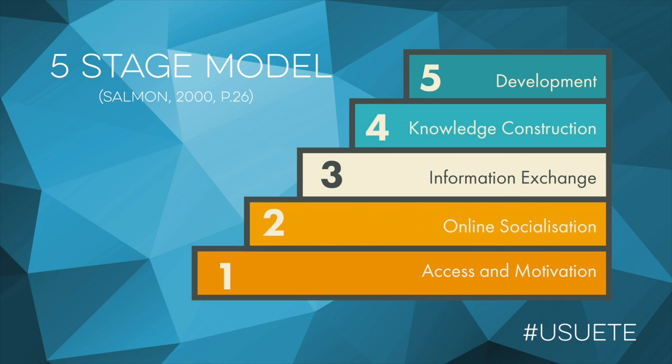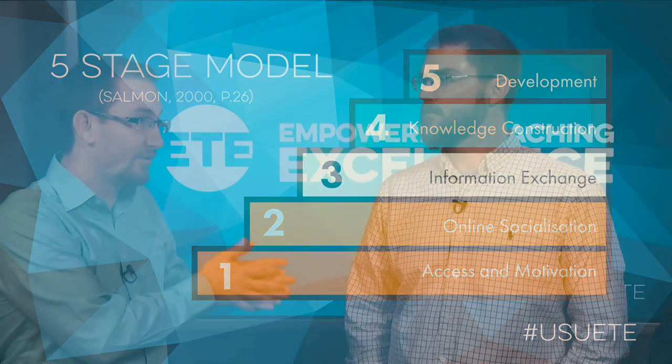That actually relates to what Julie Salmon calls the five-stage model — really creating this architecture of engagement. It allows you as the instructor to create a framework or scaffolding to build students up from their lack of knowledge of the technology, or knowledge of how to interact within the technology, to the point where they can co-construct knowledge with their peers and really reach those higher levels of Bloom's Taxonomy.